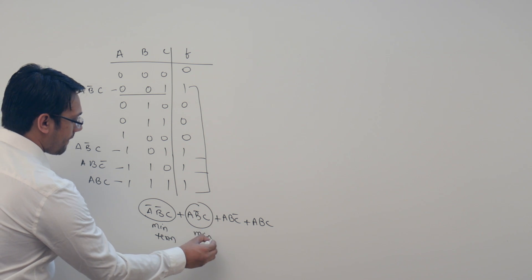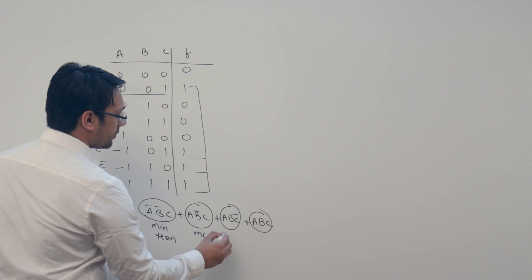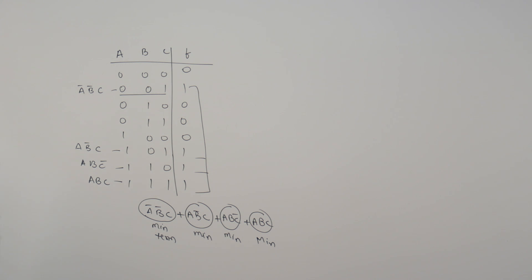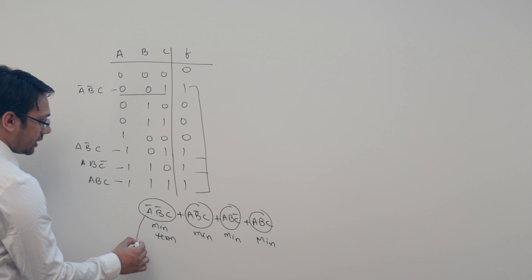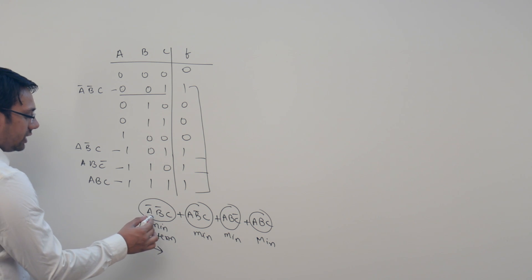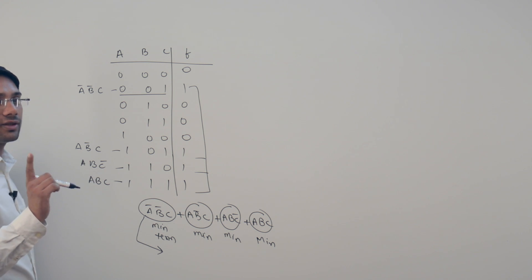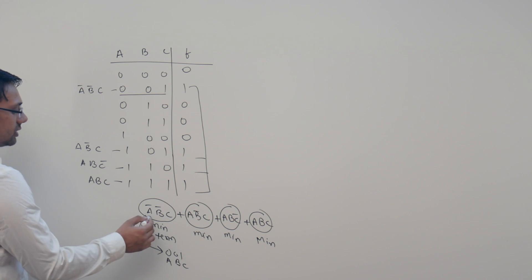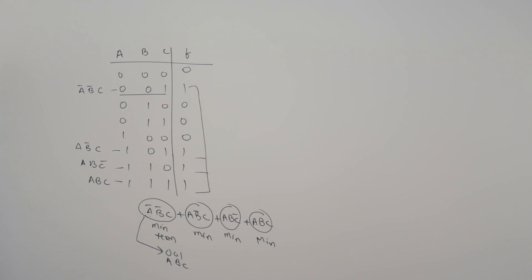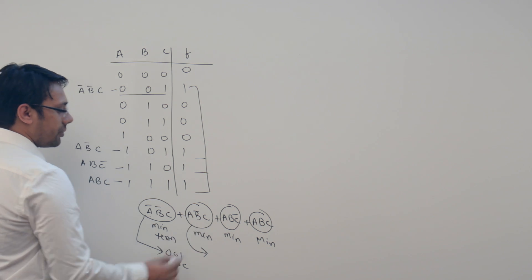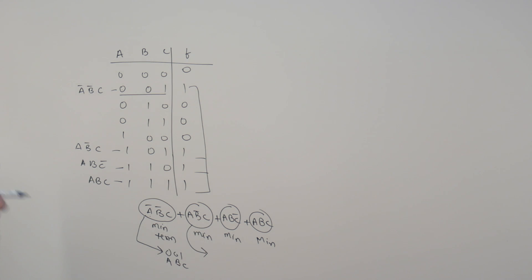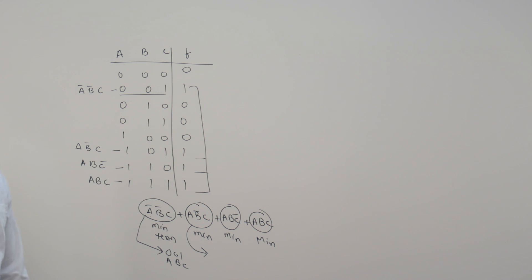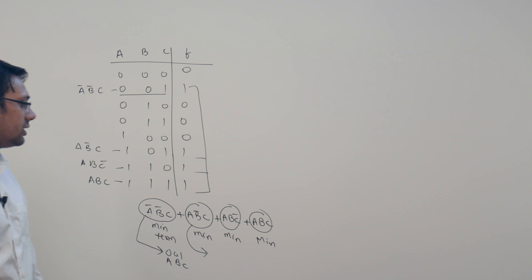Now in this complete expression, this is a min term, this is a min term, this is a min term, and this is a min term. All these locations where the function is assuming a value 1 represent a min term. By looking at this you can clearly see that for any particular combination, this particular combination will only get a value 1 for one single combination of A, B, and C.